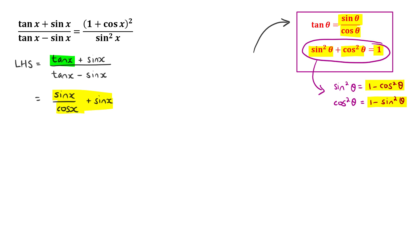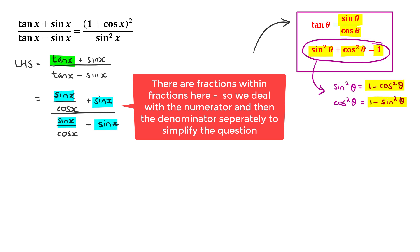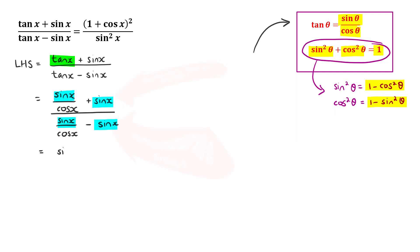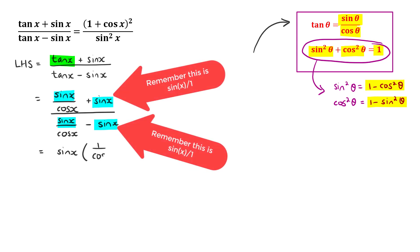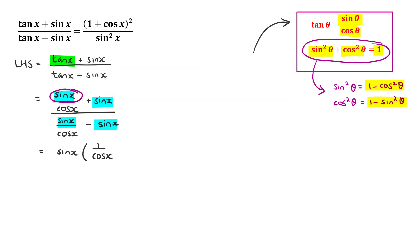We rewrite: the numerator becomes sin x over cos x plus sin x, and the denominator becomes sin x over cos x minus sin x. With what we've got, we can either factorize out sin x in both numerator and denominator, or use lowest common denominators first. Factorizing out sin x from the numerator gives sin x times (1 over cos x plus 1), and from the denominator sin x times (1 over cos x minus 1).